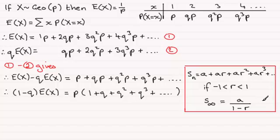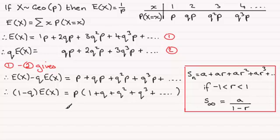In our example, the common ratio is Q — the thing we're multiplying by each time. The first term a is 1. Because Q is a probability, it lies between 0 and 1, so we can apply the sum to infinity formula. This gives us P multiplied by 1 (the first term) all divided by (1 minus Q).